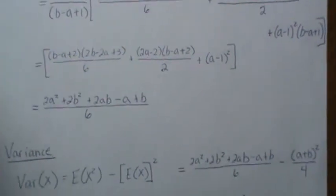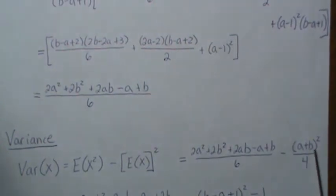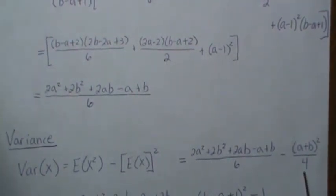Okay, so now once we have that, we can look at the variance. So the variance is expected value of X squared minus expected value quantity squared. So this piece is this, and then the squared of the mean is this from the first video.